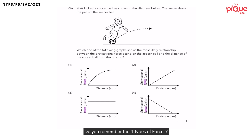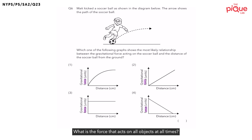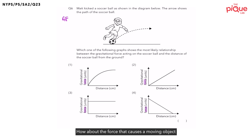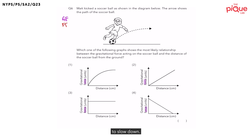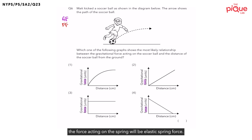Do you remember the four types of forces? Let's recap them. What is the force that acts on all objects at all times? That would be gravitational force. How about the force that causes a moving object to slow down? We know that frictional force causes a moving object to slow down. Now when I stretch or compress a spring, the force acting on the spring will be elastic spring force.